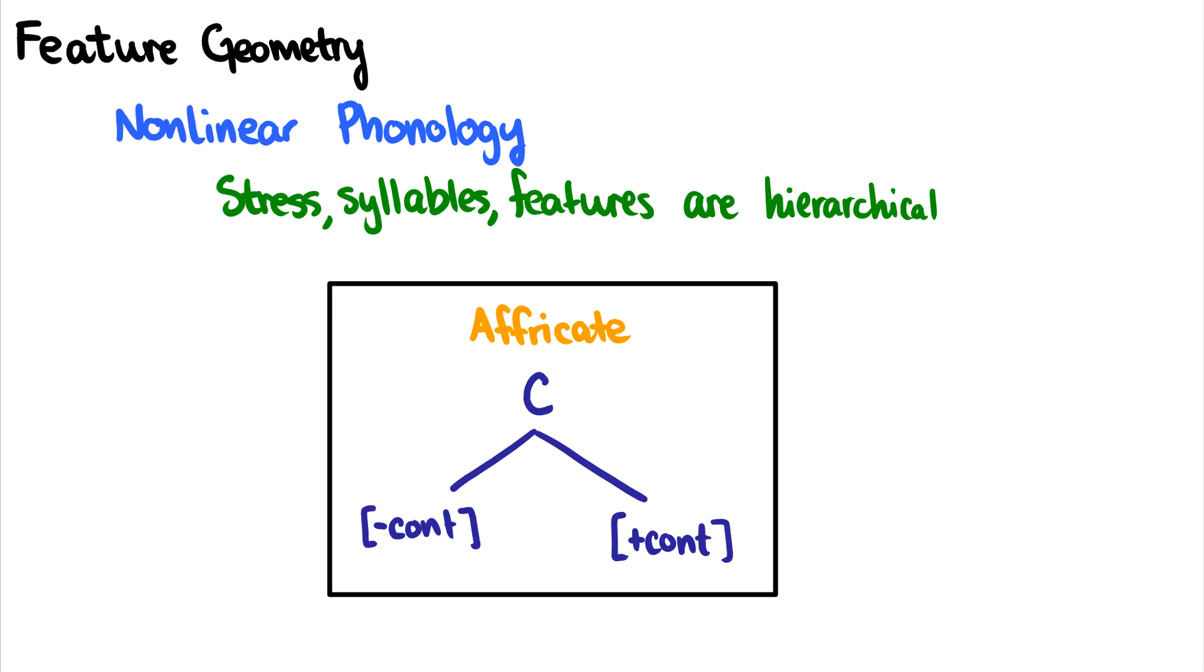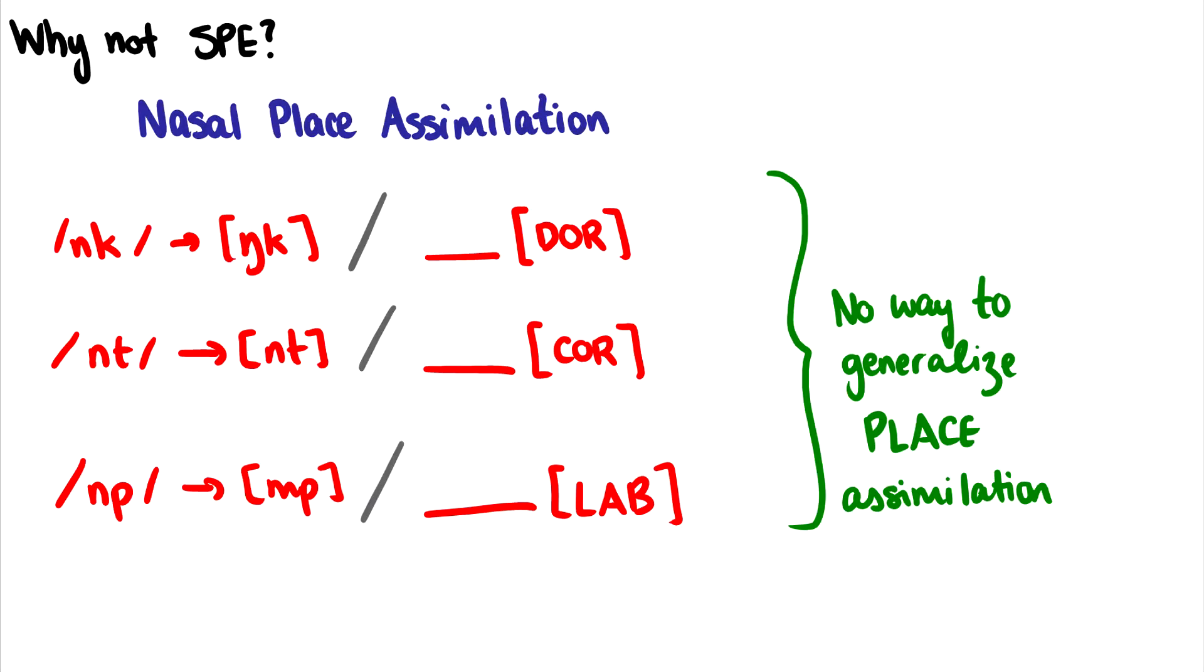So with feature geometry, we can talk about our consonants and vowels in these kinds of terms with this tree-like structure. In fact, I think the best way to see why we need it is to take a look at something like nasal place assimilation. And we'll go through this example, we'll try it in SPE, I'll show you what the feature tree looks like. And then we'll see how we can use that sort of tree-like structure in order to capture this problem and process in just a really cool and elegant way.